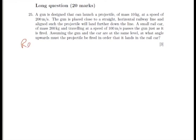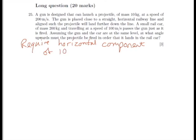This is a projectile motion question. We have a projectile travelling at 200 metres per second and a rail car travelling at 100 metres per second. How on earth can we get the projectile to land in the rail car? Well, the answer is we need the projectile to have a horizontal component of its velocity that is equal to that of the rail car, that is 100 metres per second.